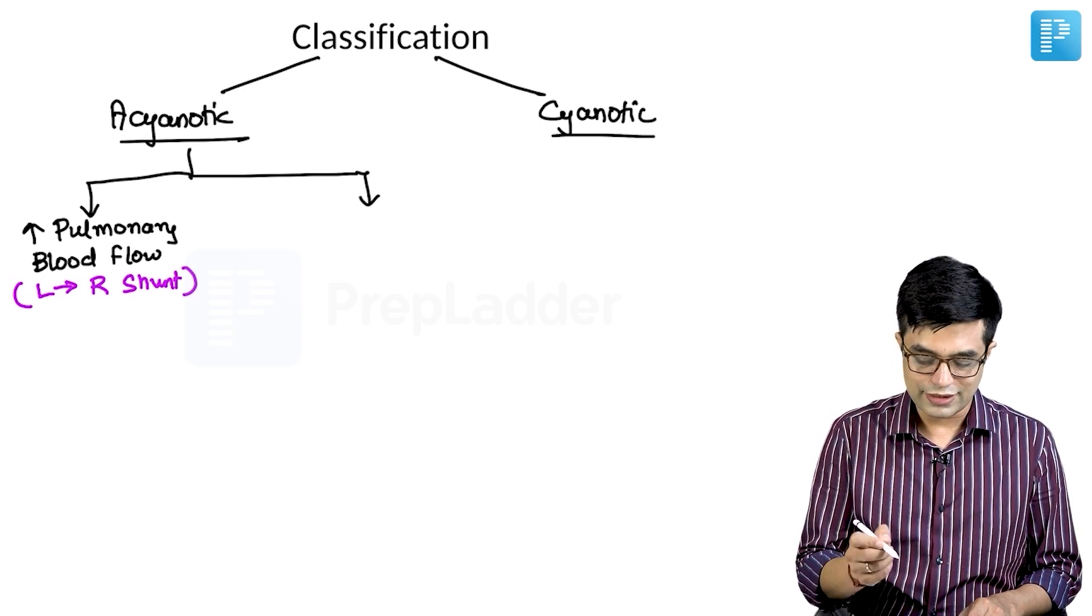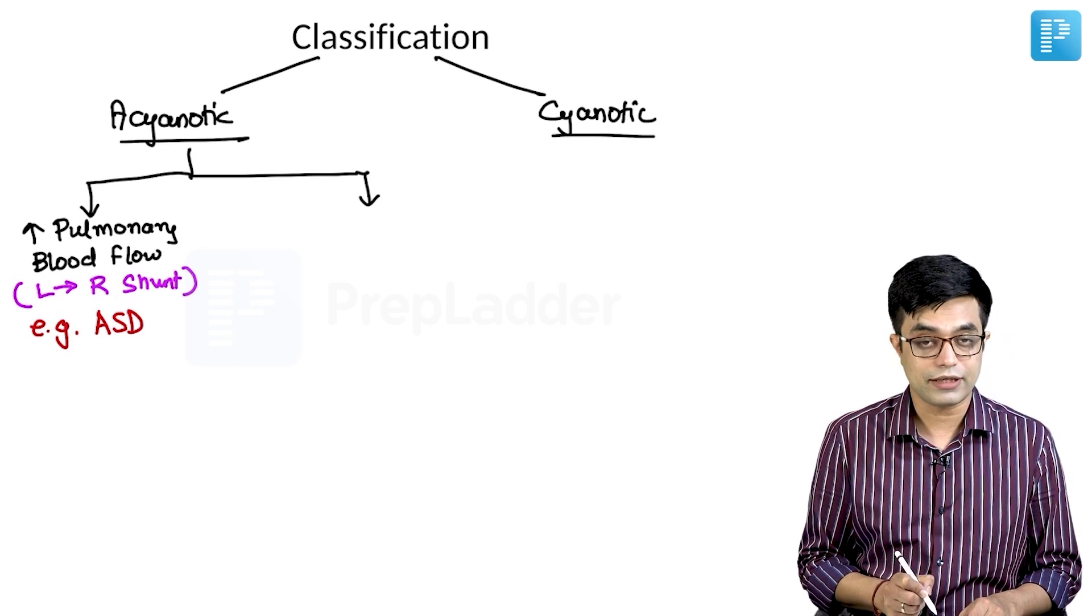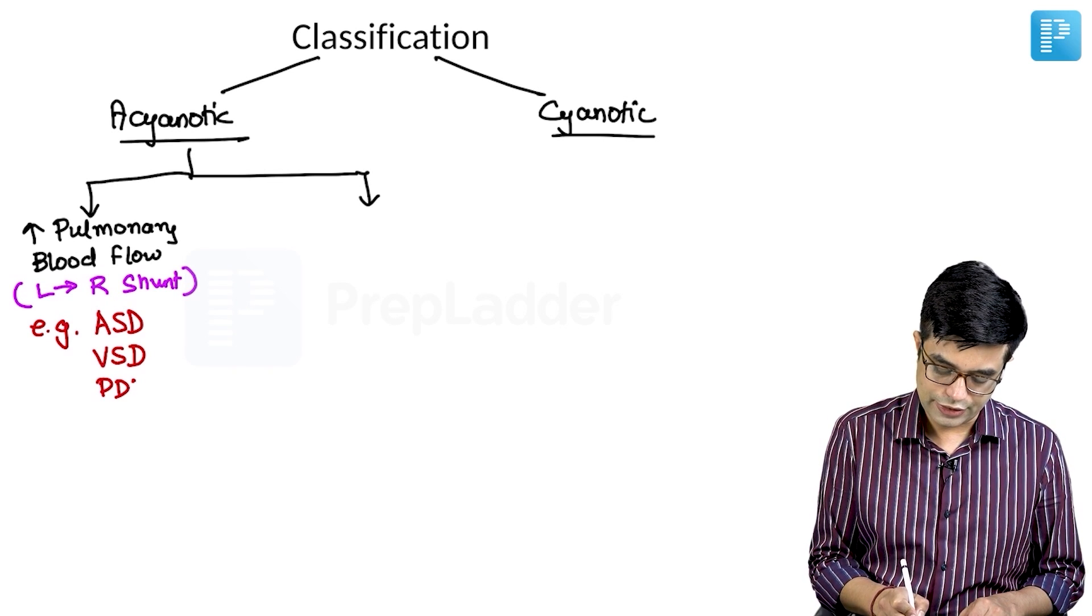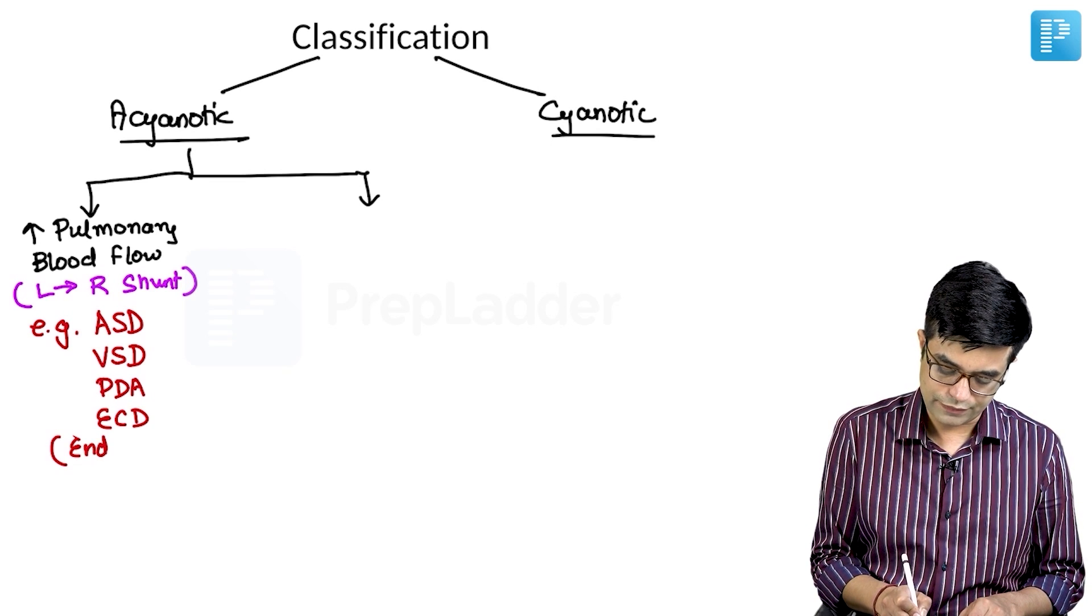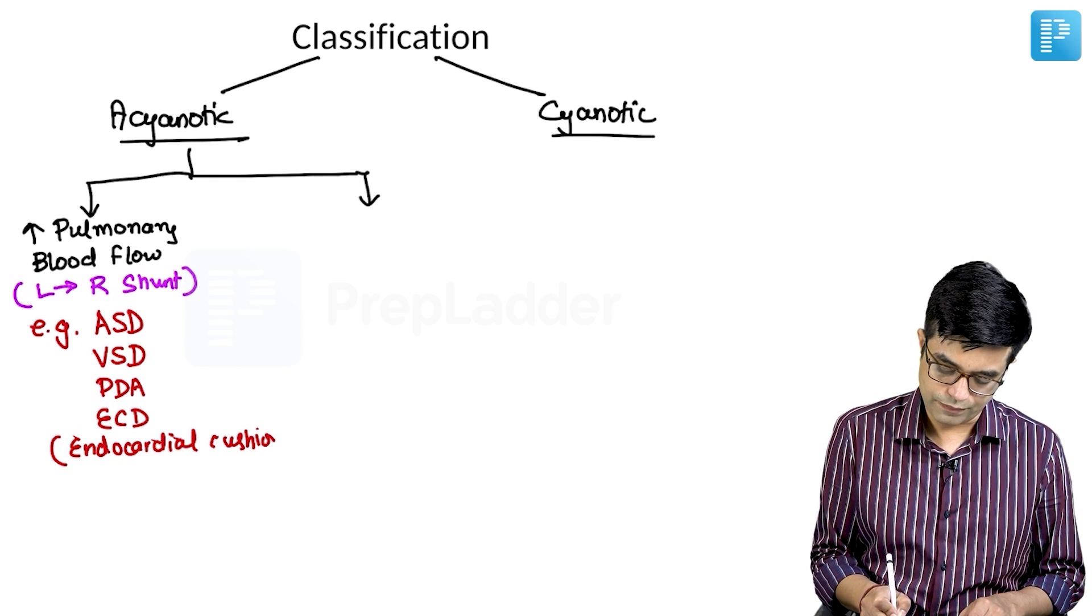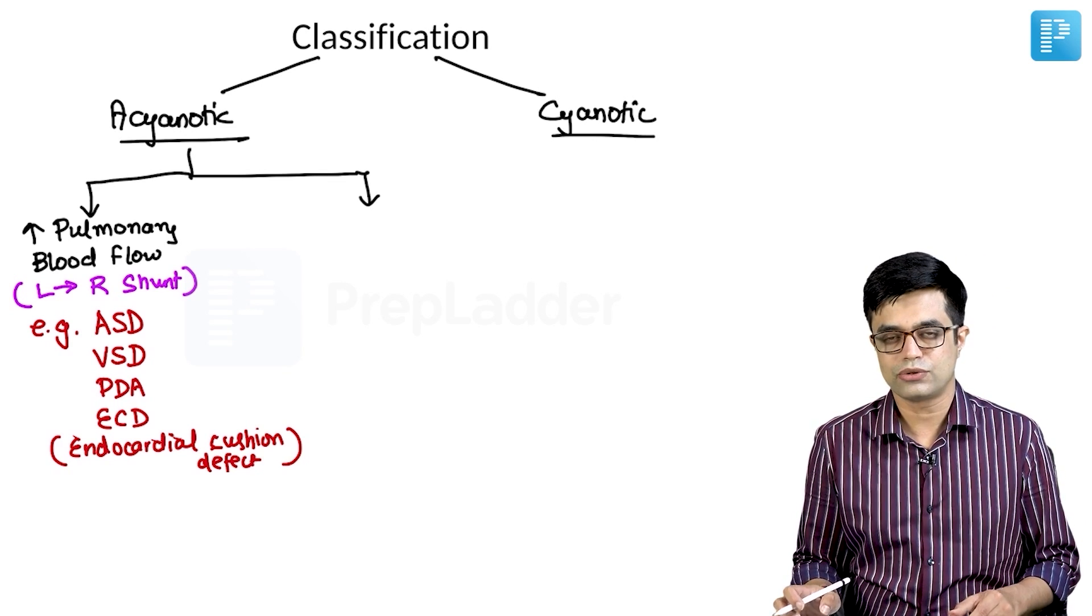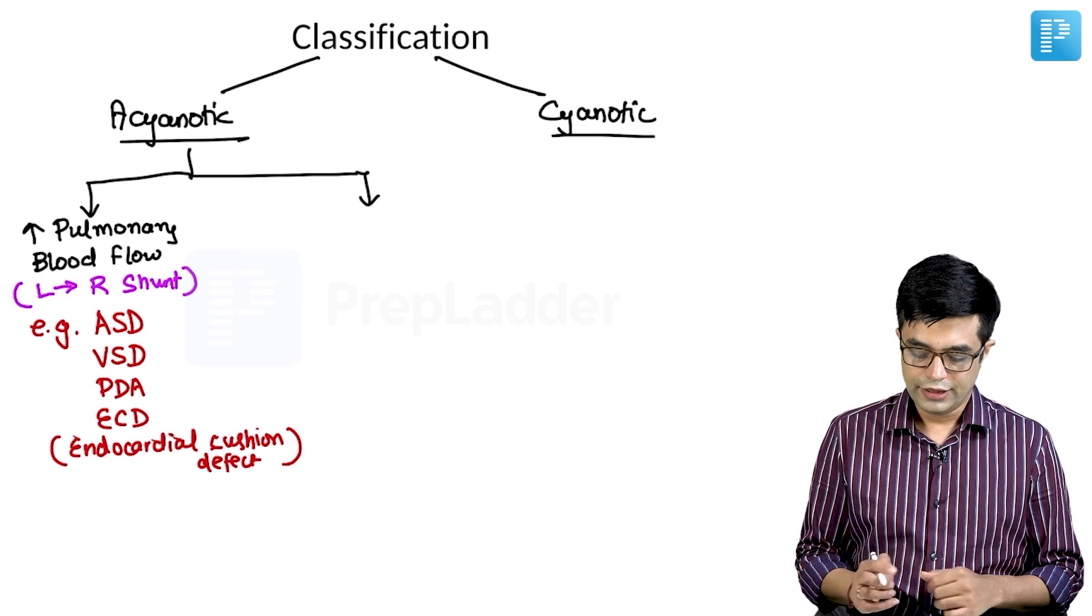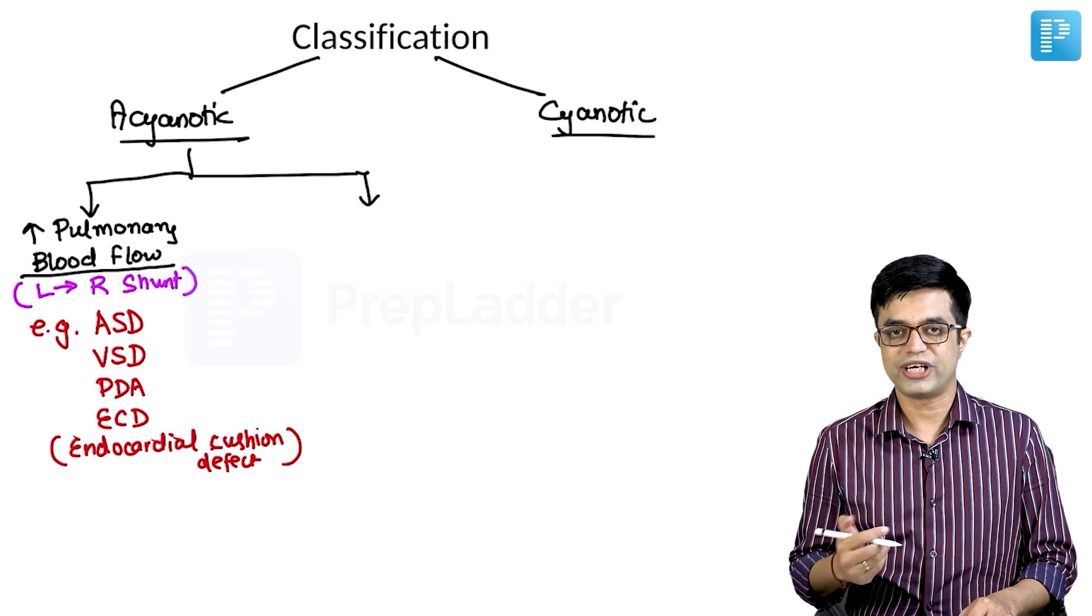This includes conditions like - since it is acyanotic, I am using a red pen - it includes your shunt lesions like atrial septal defect, ventricular septal defect, patent ductus arteriosus, and your ECD. ECD stands for endocardial cushion defect which is the most common congenital heart disease in Down syndrome. Endocardial cushion defect is also sometimes called atrioventricular canal defect. Details of these diseases we will discuss in subsequent modules. So first we have acyanotic diseases, increased pulmonary blood flow - shunt lesions.